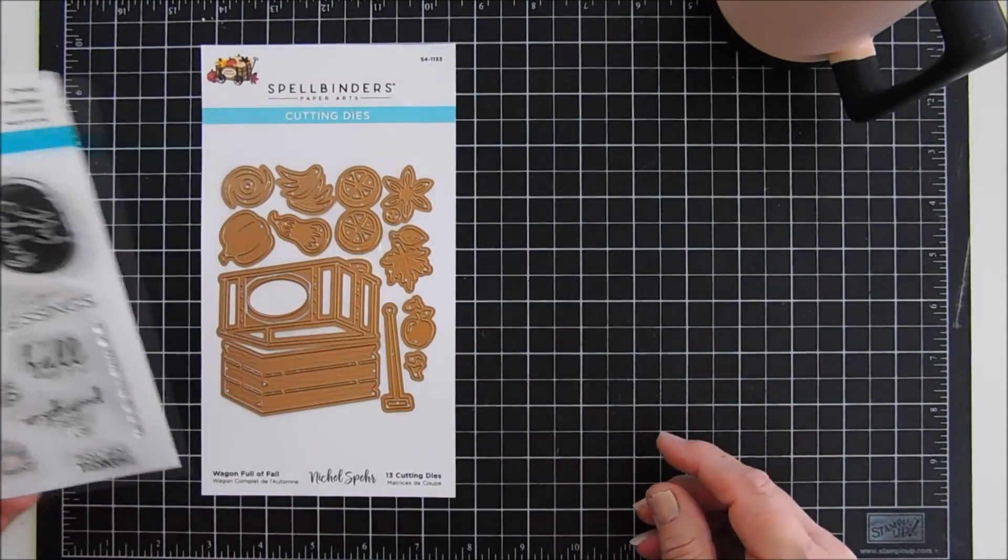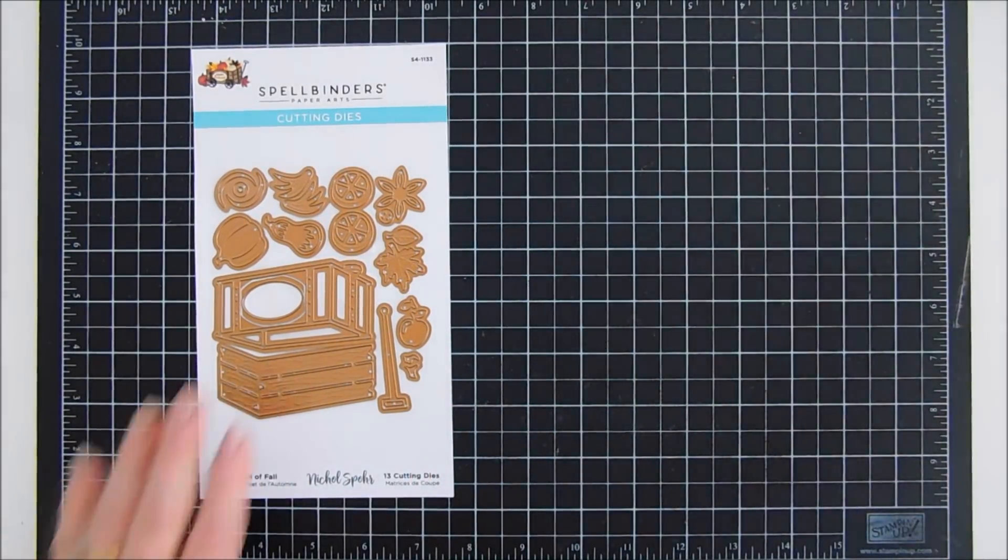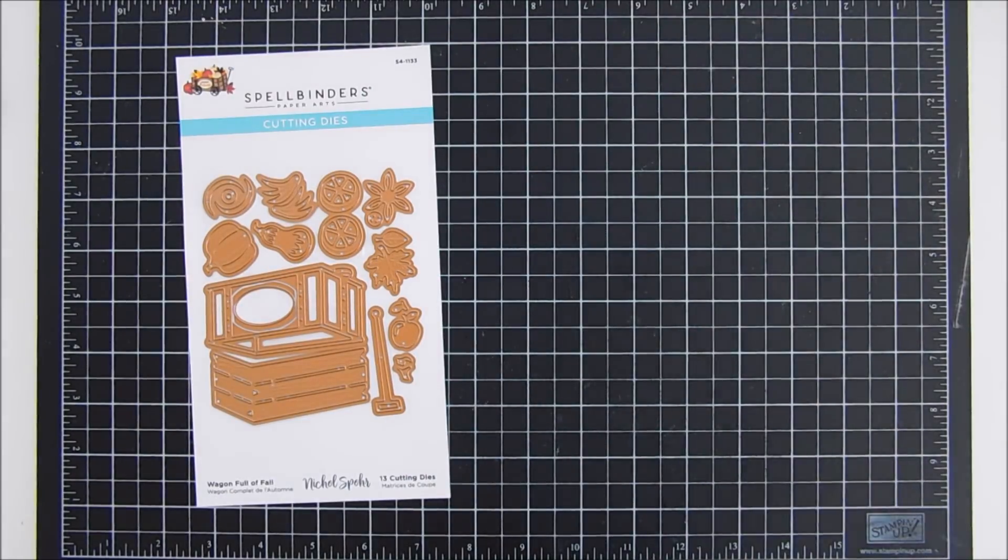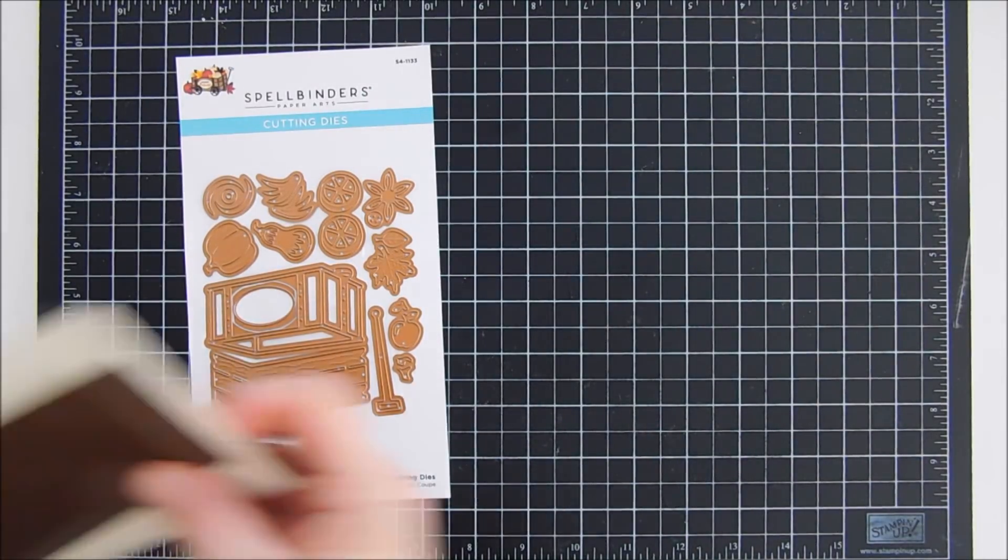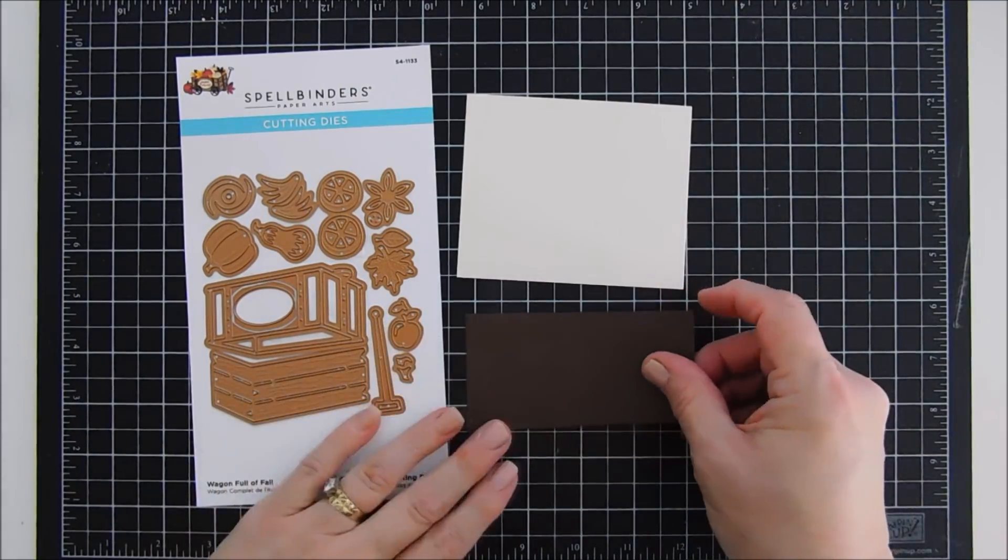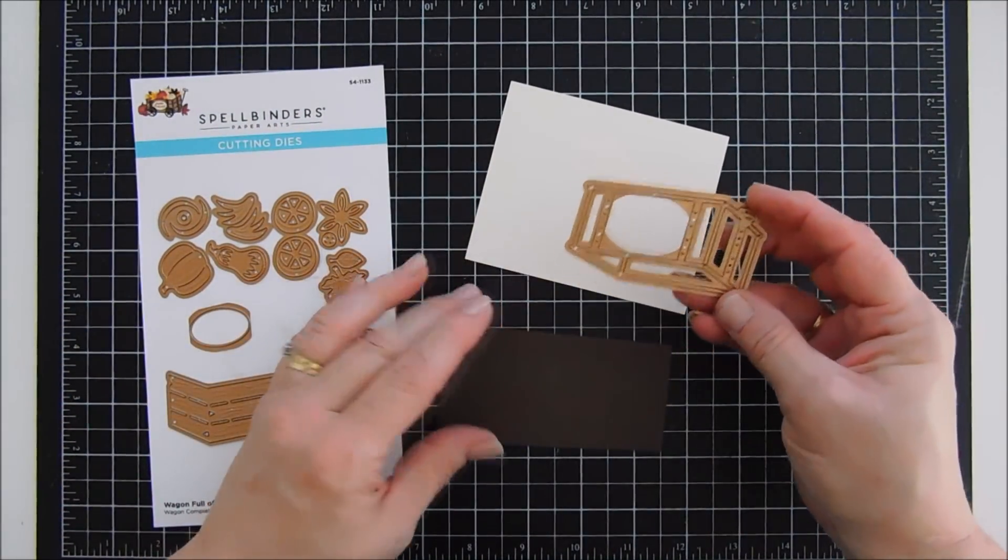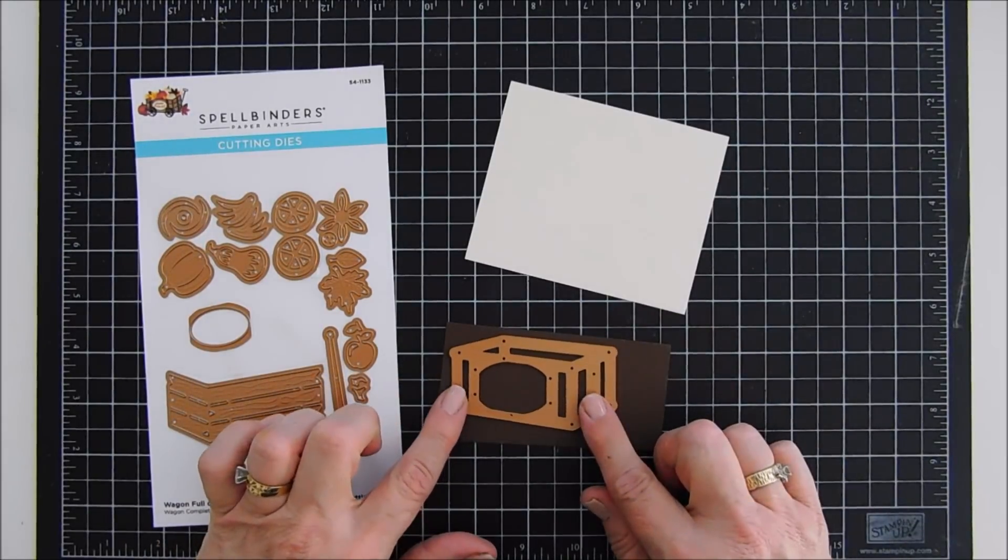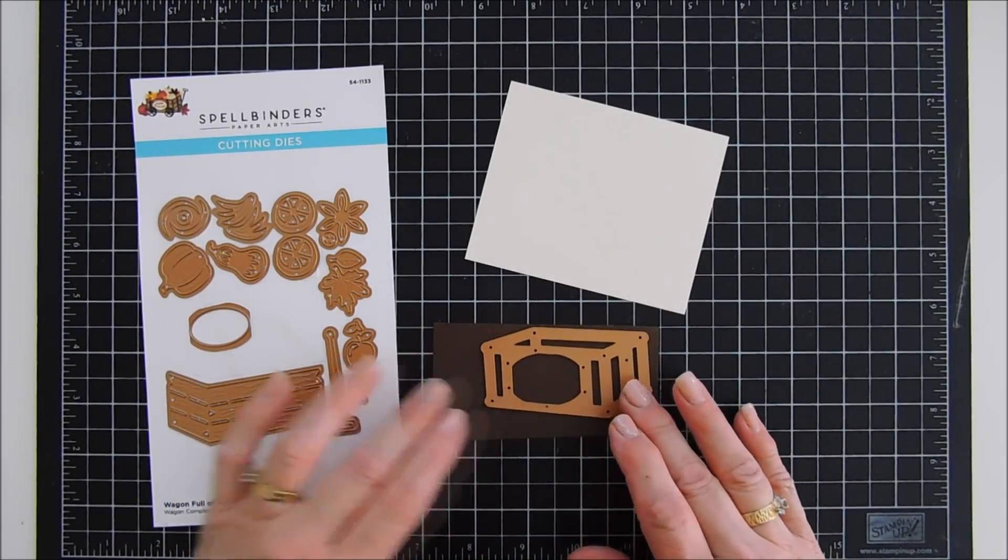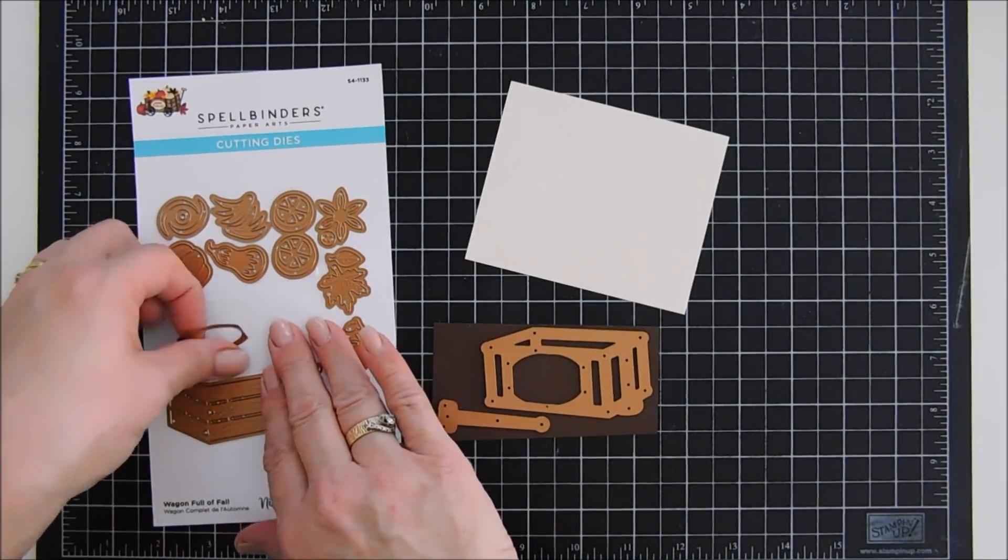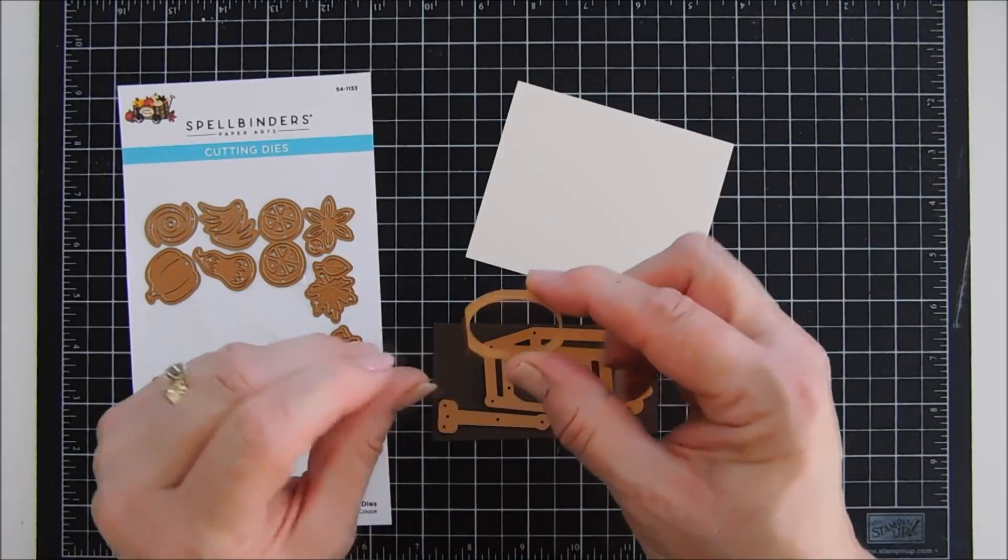The stamp set is called Fall Greetings. We'll be using that for our cards today and then the die set is pretty amazing. It is called Wagon Full of Fall and it creates this cute little wagon and then there's lots of elements that you could put in the wagon. So there's pumpkins and all kinds of gourds. There's even little hay that's just adorable. There is a sunflower or a flower in the die set and there's also an apple.